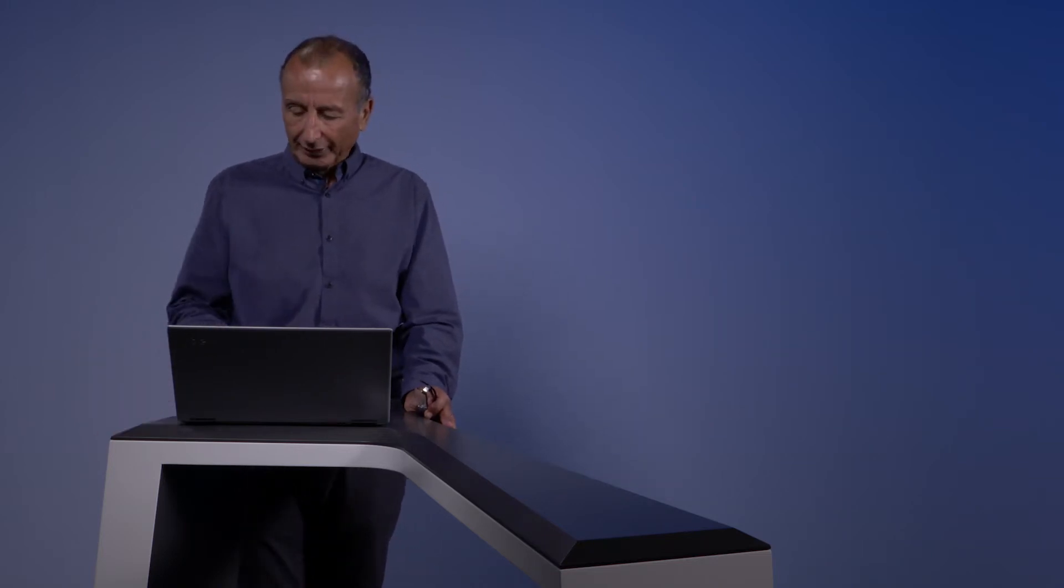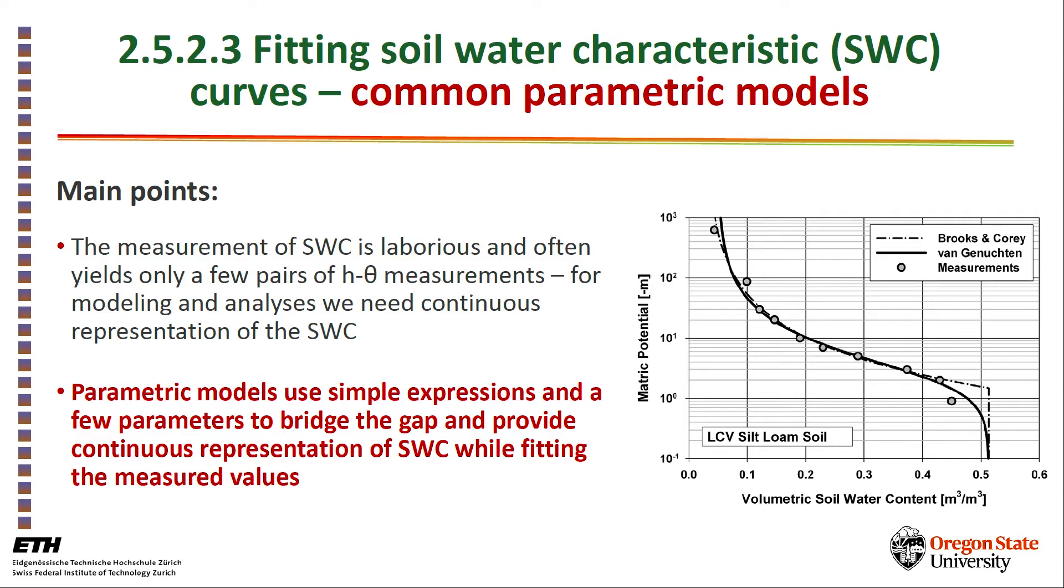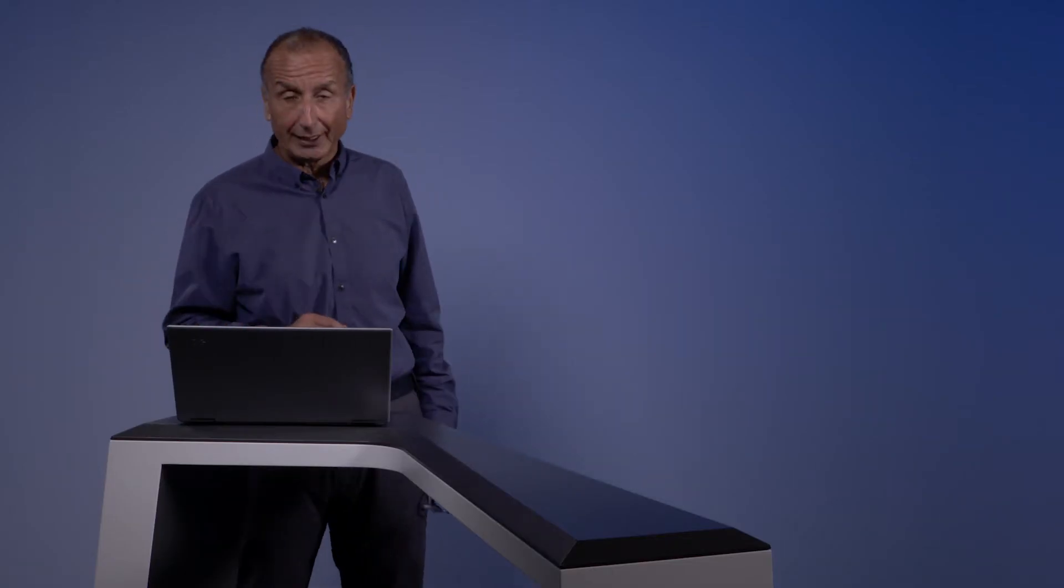If you remember, the soil-water characteristic curve relates the water content to the matric potential or to the capillary pressure. The relationships are highly nonlinear and it is a very difficult function to measure. All we can do is collect a few pairs of water content and matric potential values, probably in the order of 5-6 per soil type.